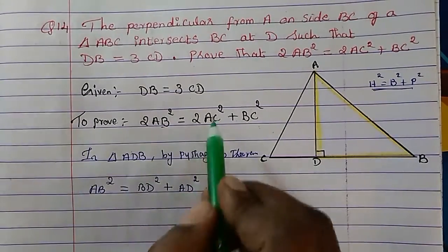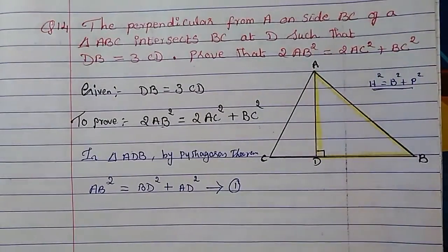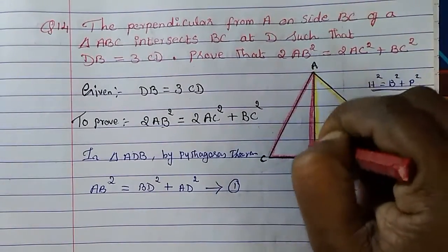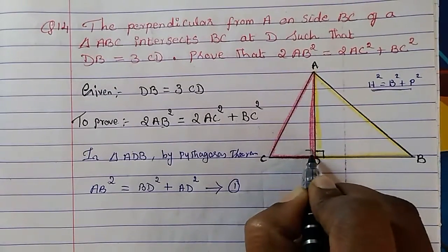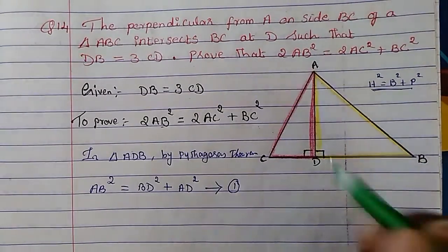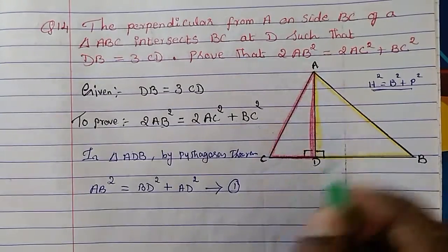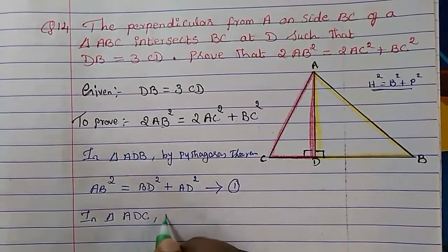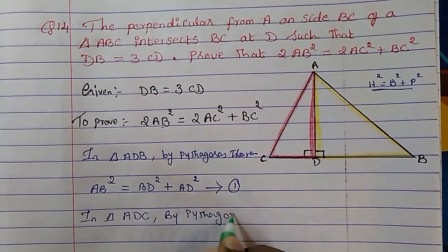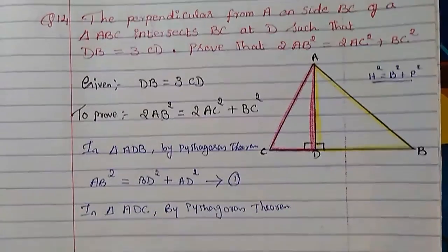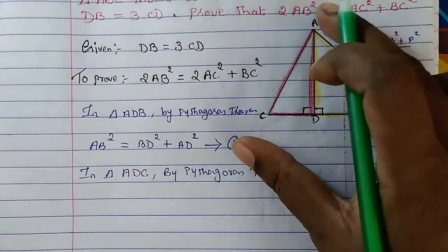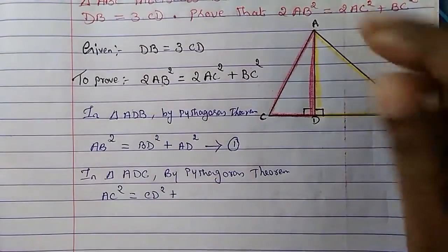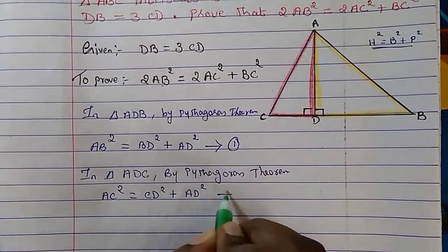Similarly, to get AC², we take triangle ADC. The angle at D is also 90°, so opposite to 90° becomes the hypotenuse. By Pythagoras theorem in triangle ADC: AC² equals CD² plus AD². Let's consider this as equation 2.